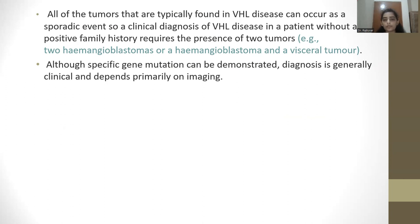A clinical diagnosis of VHL disease in a patient with a positive family history requires the presence of two tumors — for example, two hemangioblastomas or a hemangioblastoma and a visceral tumor. Although specific gene mutations can be demonstrated, diagnosis is generally clinical and depends primarily on imaging.